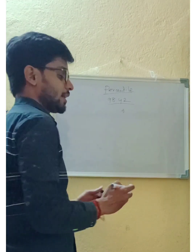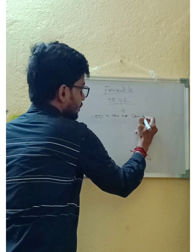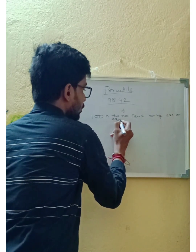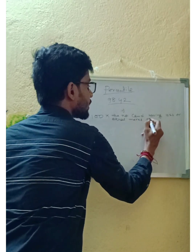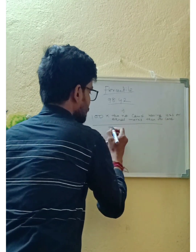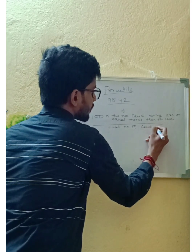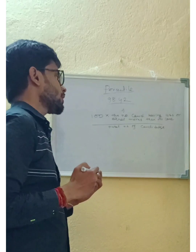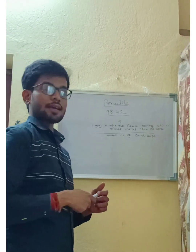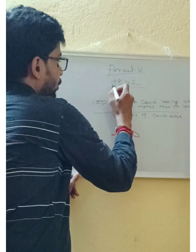CSIR has its own formula for calculating percentile, and that is: 100 multiplied by the number of candidates having less than or equal marks than the candidate, divided by the total number of candidates. So this is the formula for calculating percentile.